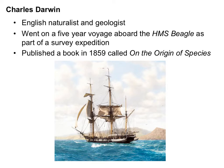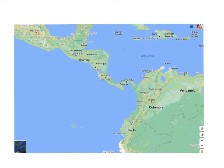When talking about evolution, we have to talk about Charles Darwin, known as the father of evolution. He was an English naturalist and geologist who went on a five-year voyage aboard a ship called the HMS Beagle as part of a survey expedition. In 1859, he published a book called On the Origin of Species, which is why he gets so much credit, though he wasn't the only person at the time with this idea — he was just the one who published first.